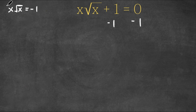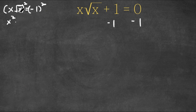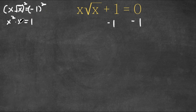I'm going to go ahead and square both sides. Now, x times the square root of x, squared: x squared is simply x squared, and the square root of x squared is simply x. So we have x squared times x, and this is equal to negative 1 squared, which is 1.